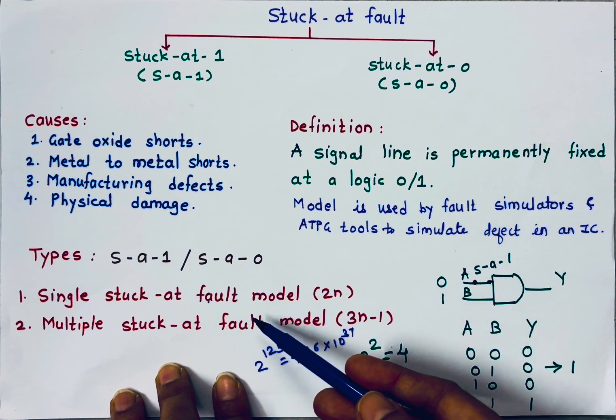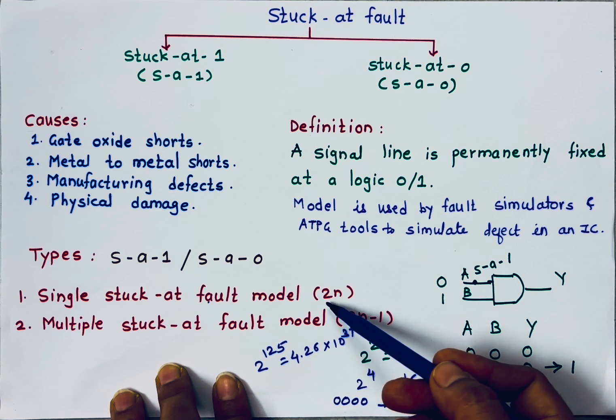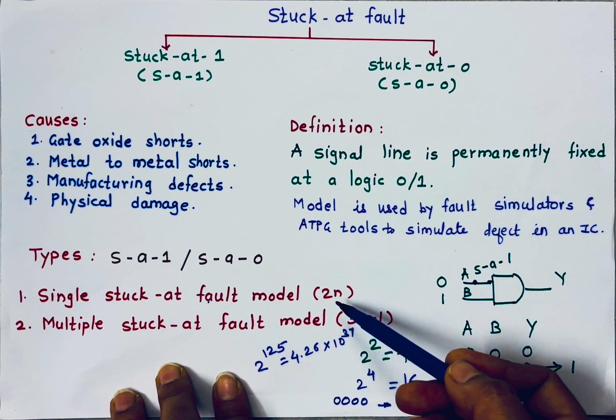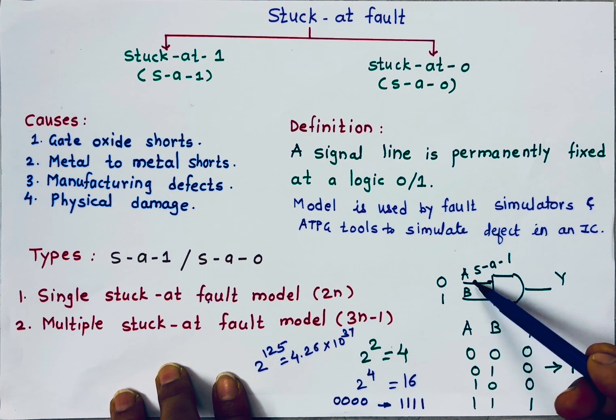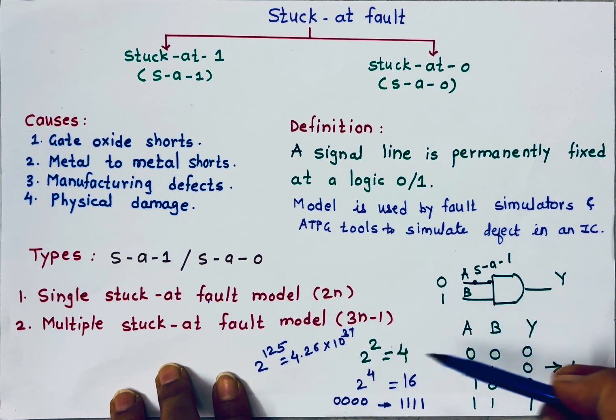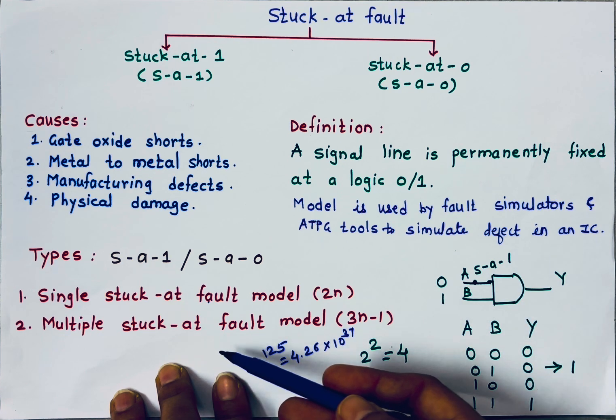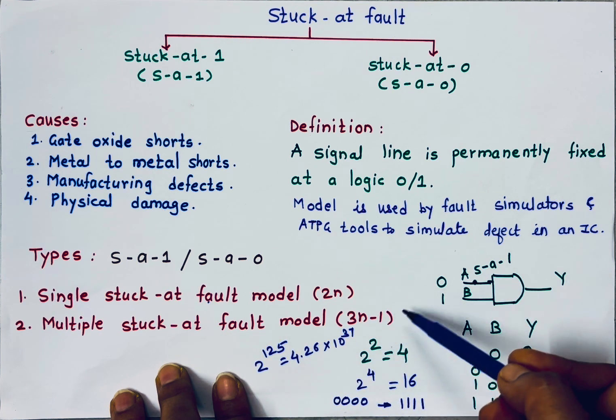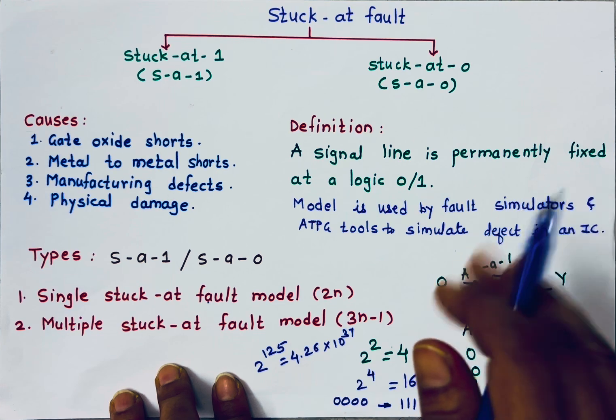When we use single stuck at fault model, then number of patterns are 2n. n are number of inputs. So if I have 2 inputs, then 2 into 2, 4 patterns will be generated. But for multiple stuck at fault model, 3n minus 1 number of patterns will get generated.